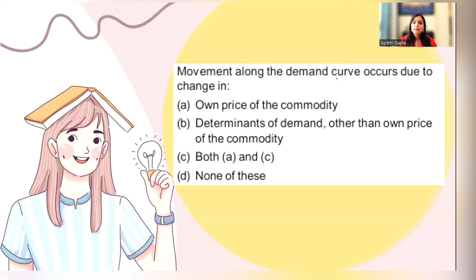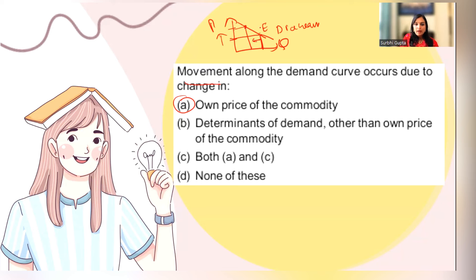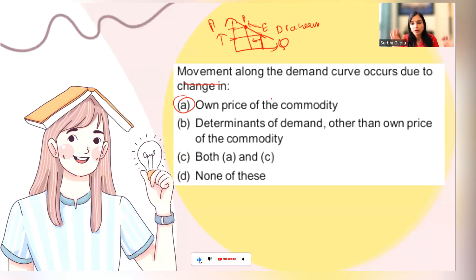Movement along the demand curve occurs due to a change in own price. When the price changes, we say there is movement. When other factors change, we say there is a shift. If you were at point E consuming ice cream and the price increased, demand decreased and you move upward from E to P. If the price reduces, there is downward movement. Movement happens when price changes; when other factors change, demand shifts.